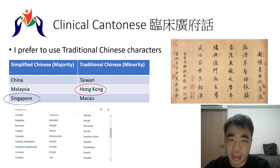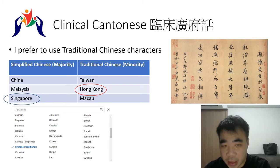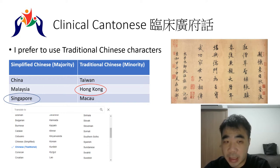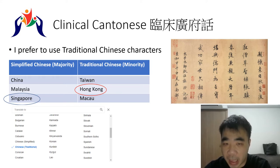There are two forms: traditional Chinese and simplified Chinese. Nowadays simplified Chinese is used by the majority of people in China, Malaysia and Singapore. But traditional Chinese is still in use in Taiwan, Hong Kong and Macau. I'm from Hong Kong, so from my early education I've been using traditional Chinese.